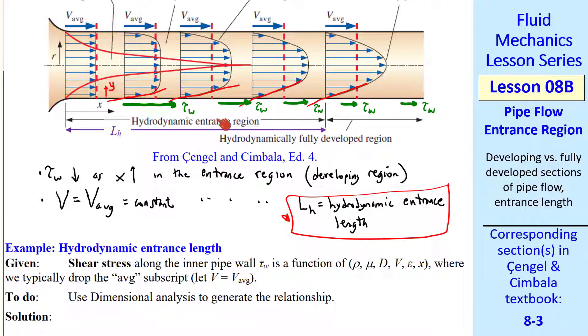Because tau_w is larger in the entrance region than it is in the fully developed region, this portion of the pipe has a higher head loss per unit length than does the fully developed region. In a later lesson we will develop expressions to account for this entrance effect.